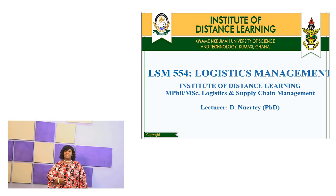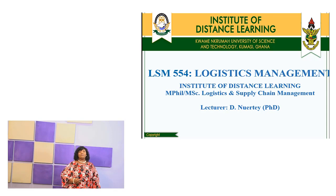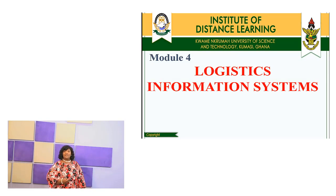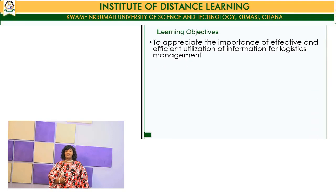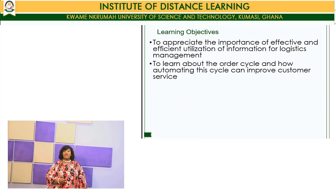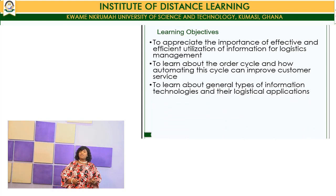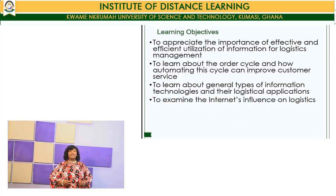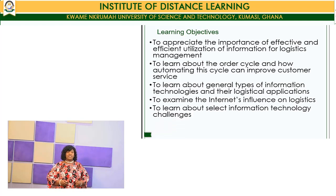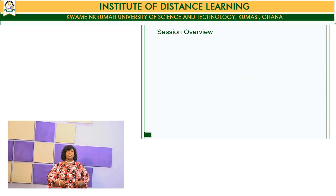Today we're going to continue our discussion on logistics management. We've been through modules 1, 2, and 3, and today we are going to look at module 4: logistics information systems. Our objectives include appreciating the importance of effective and efficient utilization of information for logistics management, learning about the order cycle and how automation can improve customer service, learning about general types of information technologies and their logistical applications, examining the internet's influence on logistics, and looking at some information technology challenges.